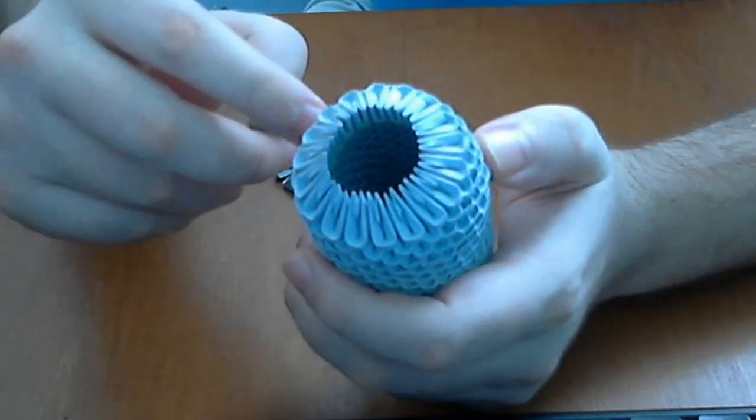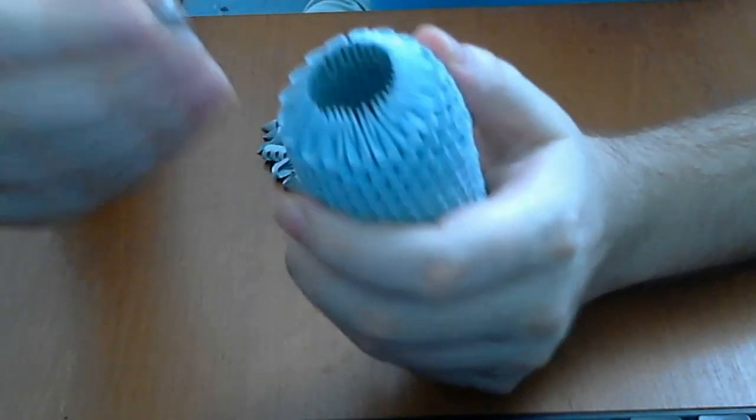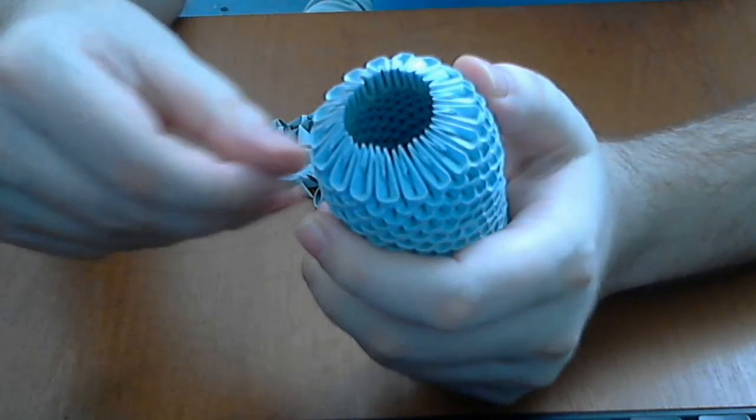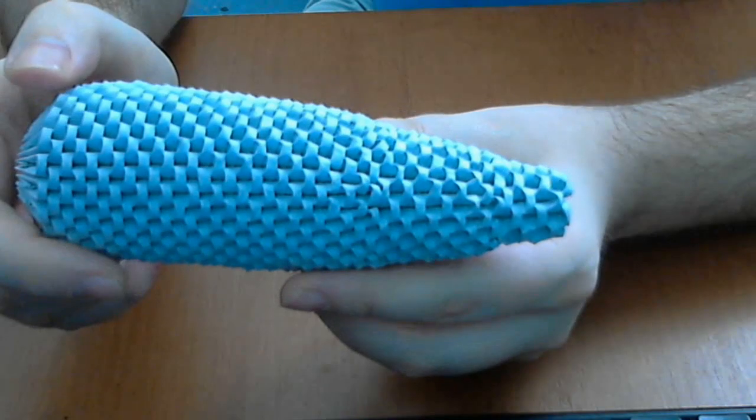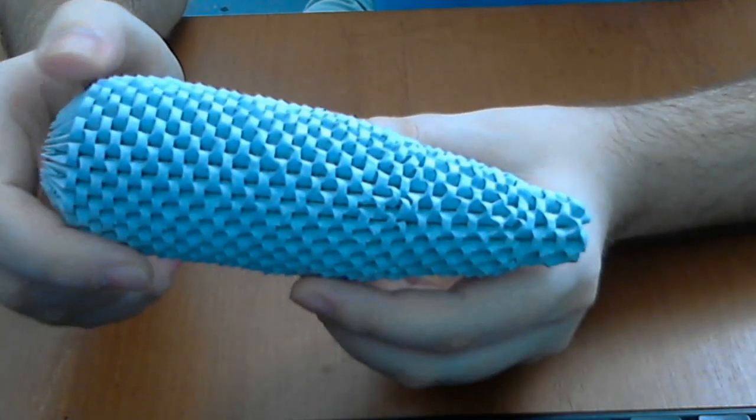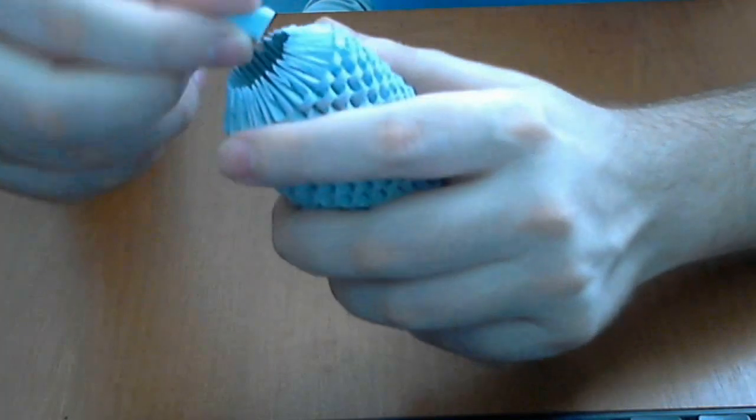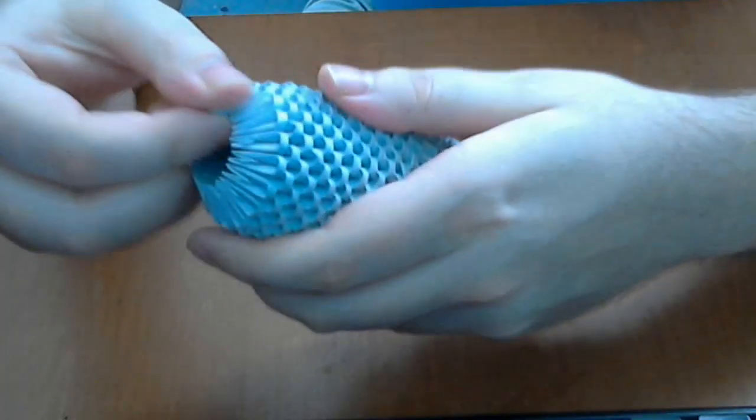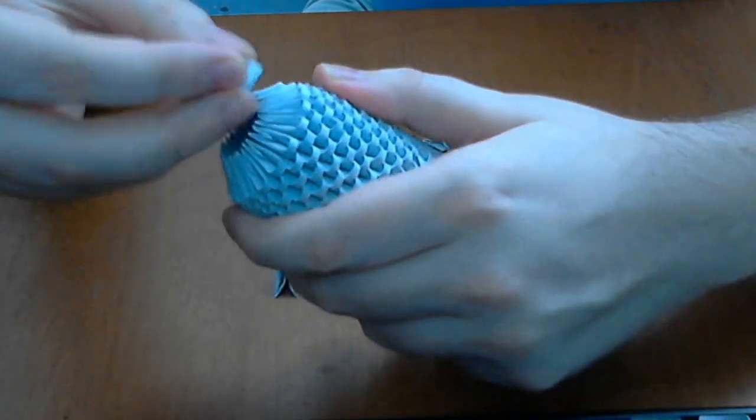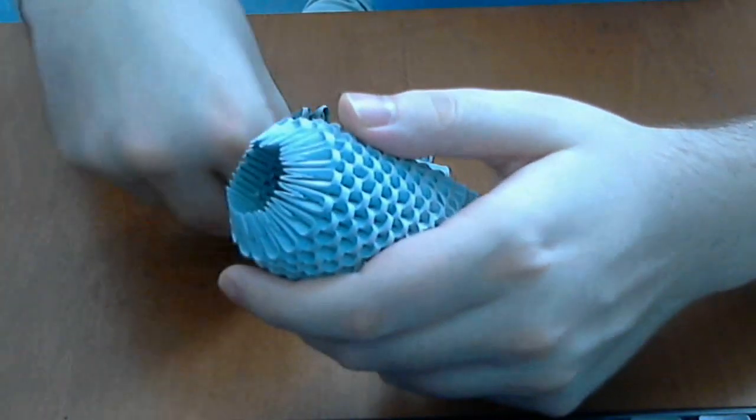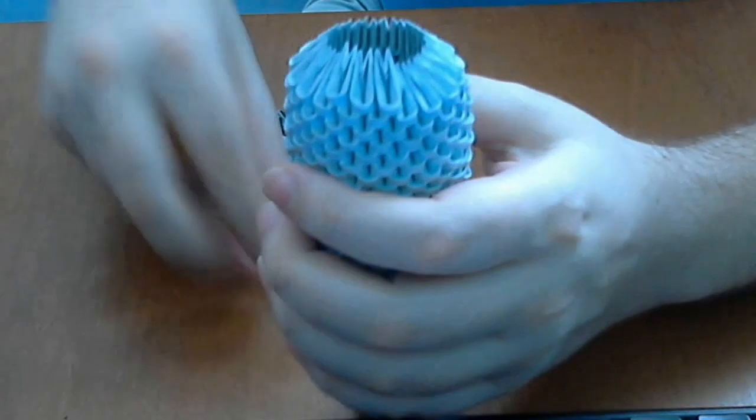Now after we put 26 rows. We will decrease a little bit the number of the pieces on the row. It shall look like this. And now first we will put 6 normal pieces. Like this.